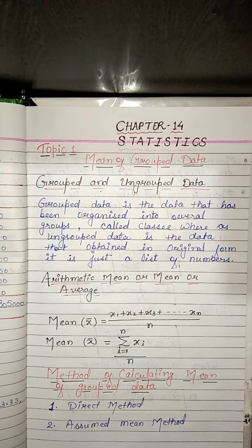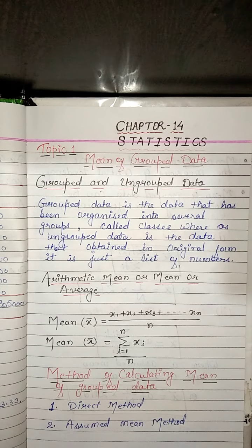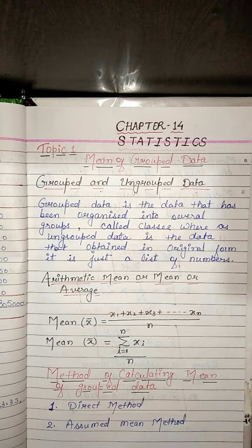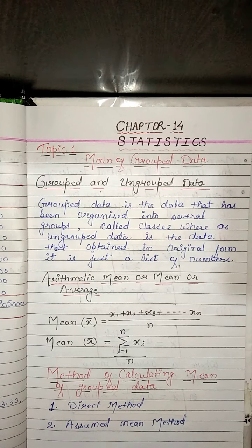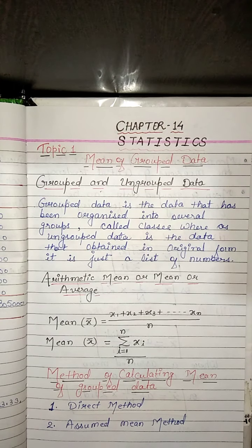We also need to know about the class mark. For each class interval, we require a point that serves as the representative of the whole class. It is assumed that the frequency of each class interval is centered around its midpoint. The class mark is equal to: lower limit plus upper limit, divided by 2.